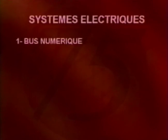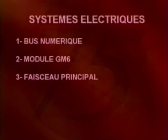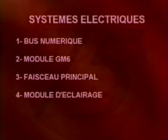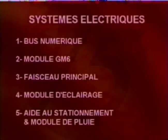La première partie concerne les systèmes de bus numériques. La deuxième partie décrit le fonctionnement du module GM6. La troisième partie concerne le faisceau principal. La quatrième partie décrit le fonctionnement du module de commande d'éclairage. Et enfin, la cinquième partie détaille le fonctionnement du système d'aide au stationnement et du capteur de pluie.